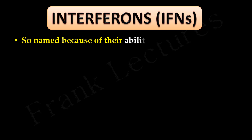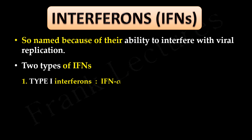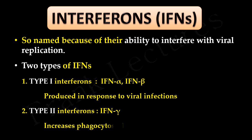Interferons, abbreviated as IFN, are named for their ability to interfere with viral replication. They are of two types: Type 1 interferons, comprising interferon-alpha and interferon-beta, are produced in response to viral infections. Type 2 interferons comprise interferon-gamma, which increases phagocytosis by macrophages.